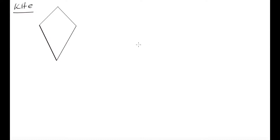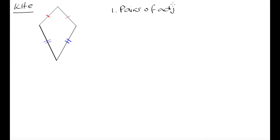The first property of the kite is that both pairs of adjacent sides are equal. What that means is that this side is equal in length to this side — these are adjacent sides — and this side is going to be equal in length to this side — these are also adjacent sides. So the pairs of adjacent sides are equal in length.